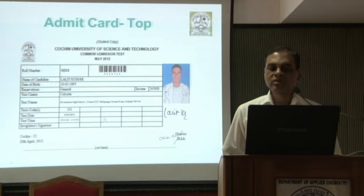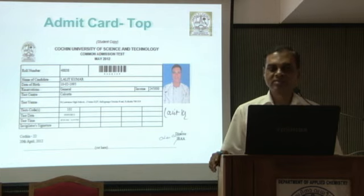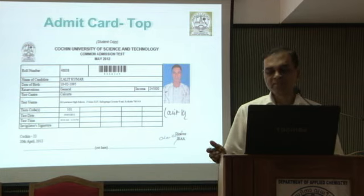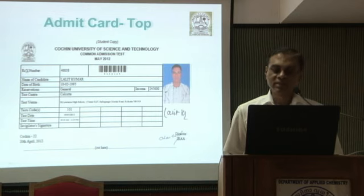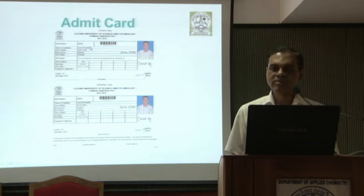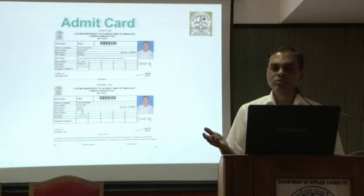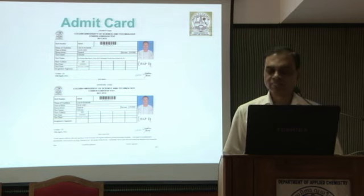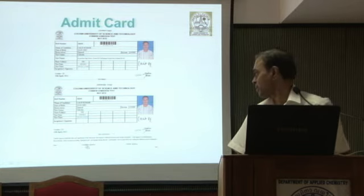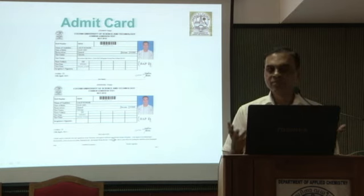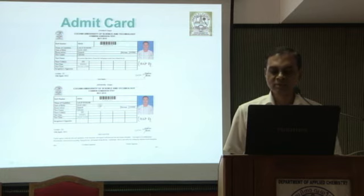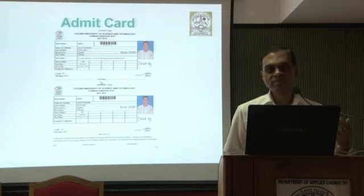If a student has to appear for three tests, he needs three copies of the admit card — we have instructed students accordingly. If he doesn't have enough, he can use a xerox copy. The bottom portion of the admit card contains a declaration where both the student and parent sign, stating they will abide by university rules and have no objection to fingerprinting. This bottom portion, when collected, becomes a document for the university, so it is important to cut and transmit it to IRAA.